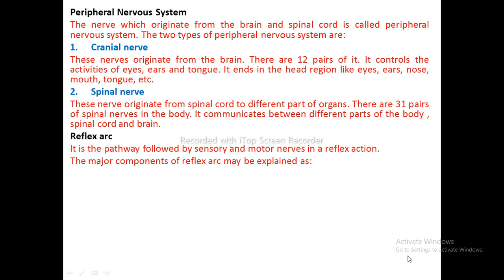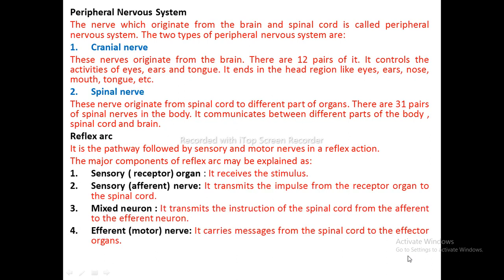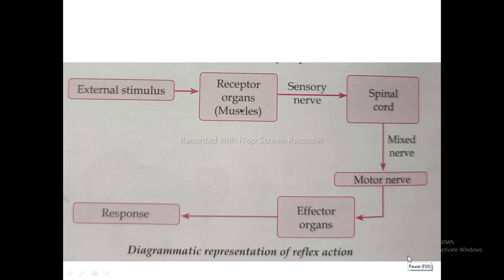Reflex Arc: The pathway followed by sensory and motor nerves in a reflex action. Components: 1. Sensory receptor organ — receives the stimulus. 2. Sensory afferent nerve — transmits impulse from receptor to spinal cord. 3. Mixed neuron — transmits the instruction from afferent to efferent neuron. 4. Efferent motor nerve — carries message from spinal cord to effector organs. Example: When a sharp pin pricks the foot, the impulse travels from receptors through sensory nerve to spinal cord, then via motor nerve to muscles, causing the leg to be removed.